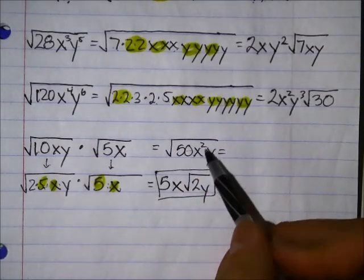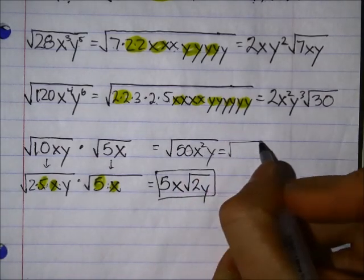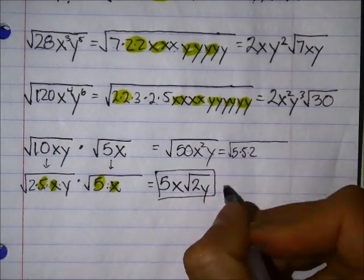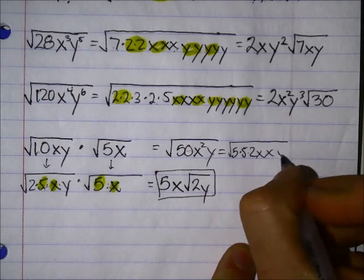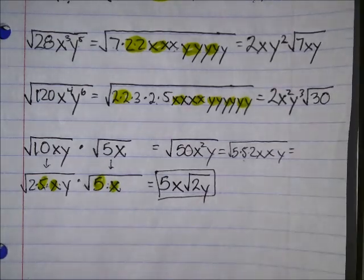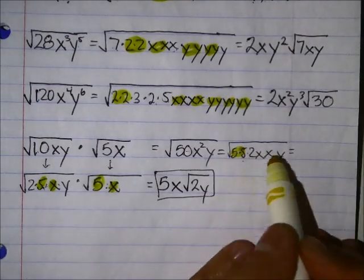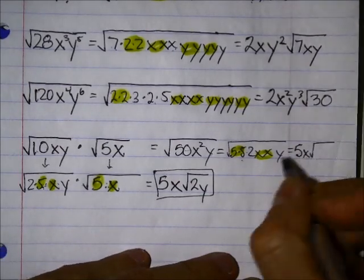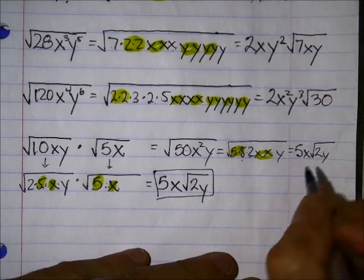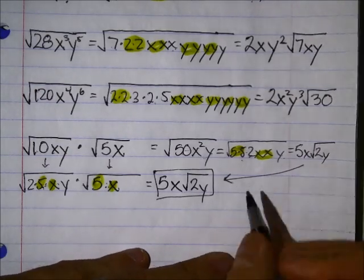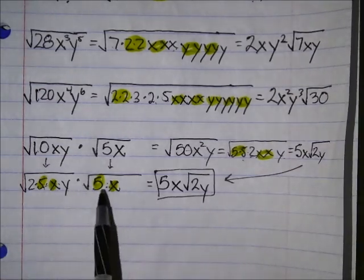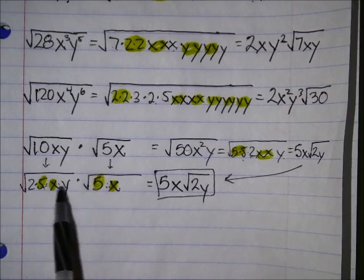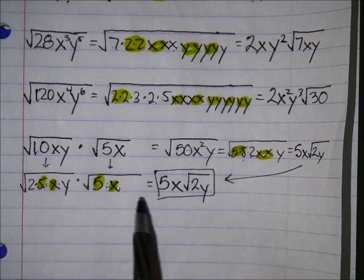Let's verify using 50x²y directly. 50 is 25 times 2, which is 5 times 5 times 2. Then 2 x's and a y. You can take out a 5 and an x, and you're left with 2 and y inside. Same answer. We just saved ourselves a step by recognizing that these two square roots are going to be combined anyway — we might as well factor and simplify now.